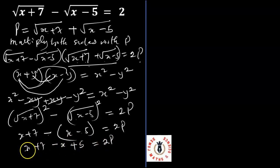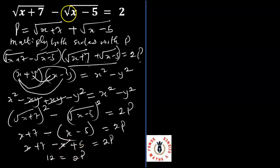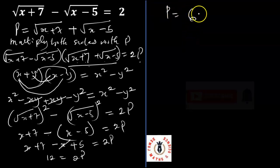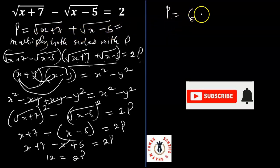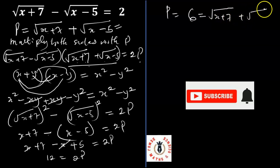So x minus x becomes 0, and 7 plus 5 gives us 12, so 12 equals 2P. Now we've found that P equals 6. Remember at the beginning we said that P equals the square root of x plus 7 plus the square root of x minus 5, so that equation gives us the square root of x plus 7 plus the root of x minus 5 equals 6.